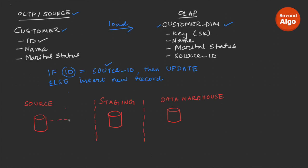Generally, it is common practice to extract data from the source system and put it into an intermediate system known as a staging area. Every day we extract data from the source system and put it in the staging area table. We then update our target data warehouse from the staging area. Often, staging and data warehouses are maintained in two different schemas under the same database.